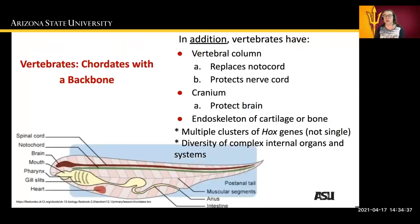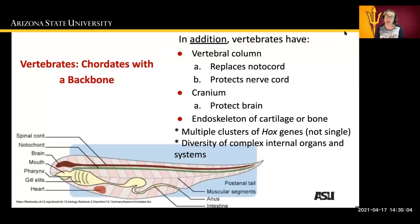In some tetrapods and amniotes, the post-anal tail becomes a vestigial organ. In addition, vertebrates have a vertebral column that replaces the notochord in development and also protects the nerve cord. We have a cranium which protects the brain and an endoskeleton made of cartilage or bone. We also see multiple clusters of hox genes — not just a single set — and a diversity in the complex internal organ systems of organisms that have vertebrae.